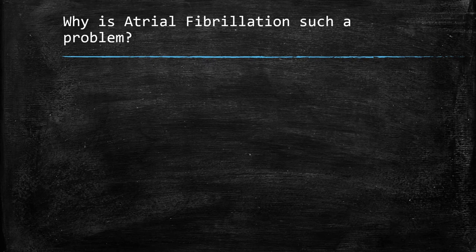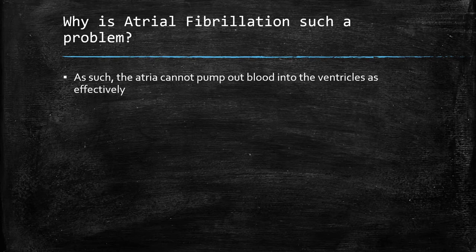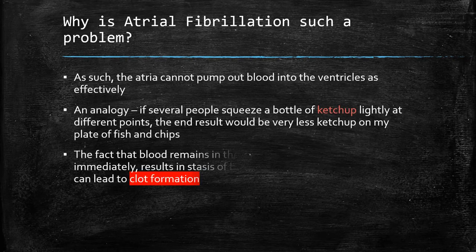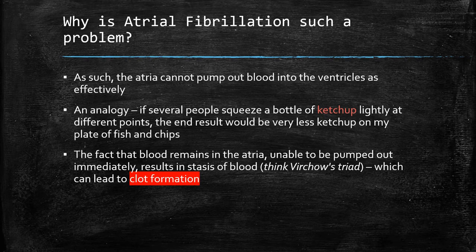Why is atrial fibrillation such a problem? It causes atrial dysfunction — the atria cannot pump blood into the ventricles as effectively. An analogy: lots of people squeezing a bottle of ketchup lightly at different points, not in unison, results in very little ketchup on the plate. Aside from the mechanical dysfunction, blood remains in the atria, unable to be pumped out, resulting in stasis. Stasis is one of Virchow's triad, which describes factors contributing to thrombosis. This stasis leads to clot formation, and these clots spread and occlude blood vessels, resulting in stroke.